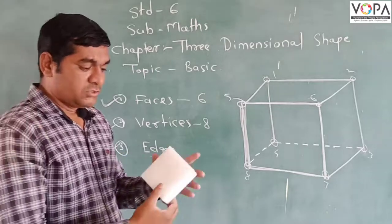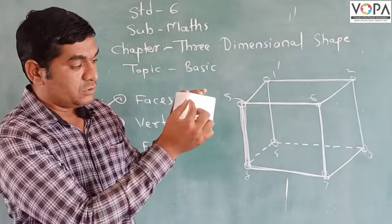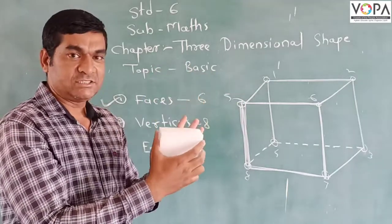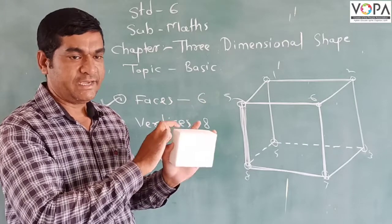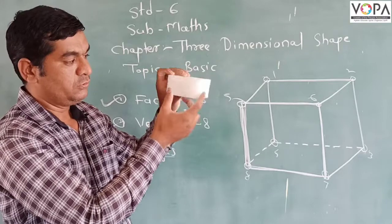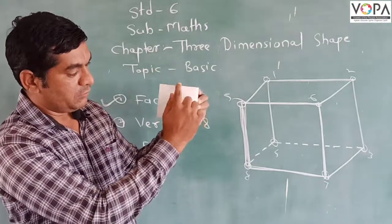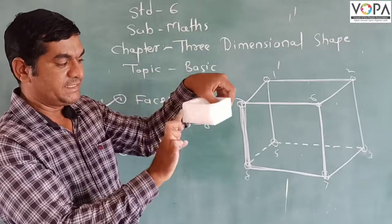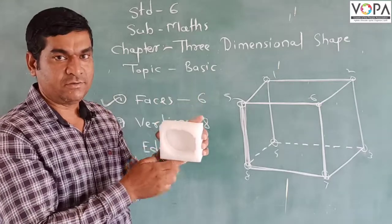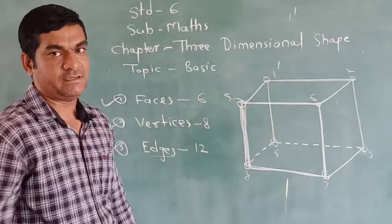Edges are there. So edges, just as I explained, what are the edges? These are the edges. So this is 1, 2, 3, 4. Back side is also 4. 4 plus 4 is 8. And the edges are here also: 1, 2, 3, and 4. So total edges, 1, 2, 3, 4, 5, 6, 7, 8, and the last 9, 10, 11, and 12. So the number of edges in this diagram is 12.